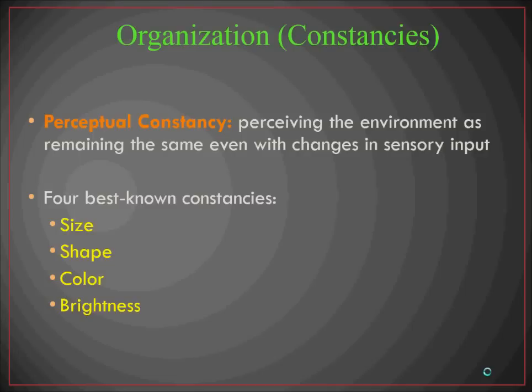Regarding perceptual constancy, this is when we perceive the environment as remaining the same even when there are changes in our sensory input. The four best-known constancies are size, shape, color, and brightness. For example, when you're walking down a long hallway toward a door, it's technically growing in size in your visual field — it starts very small but gets bigger as you walk toward it. Perceptual constancy is your brain's ability to say that door is still the same size; you're just getting close to it.